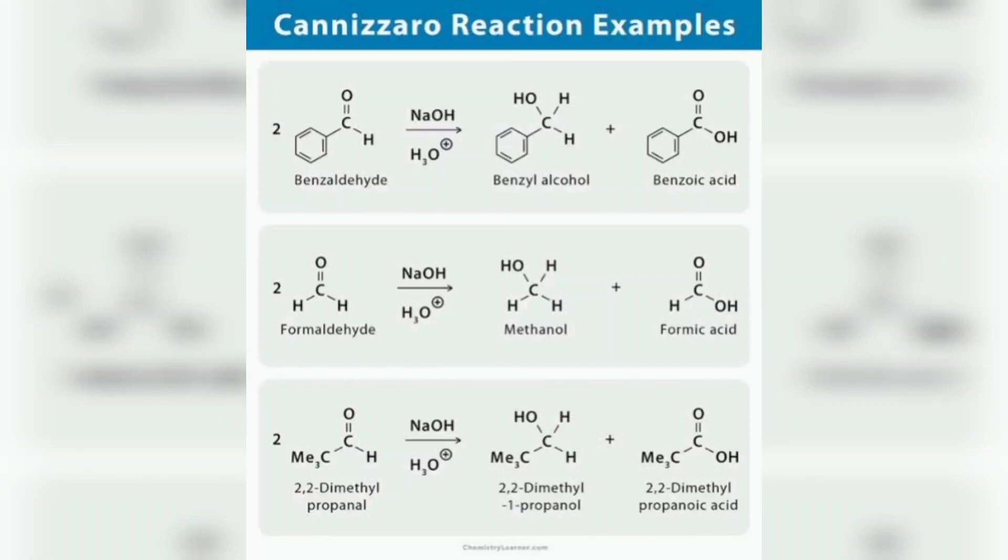The Cannizzaro reaction, named after its discoverer Stanislao Cannizzaro, is a chemical reaction which involves the base-induced disproportionation of two molecules of a non-enolizable aldehyde to give a primary alcohol and a carboxylic acid.